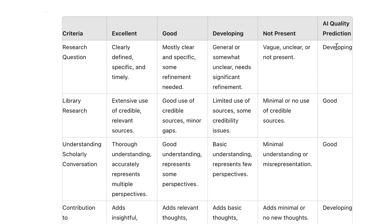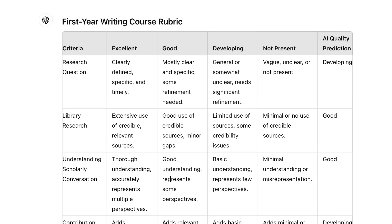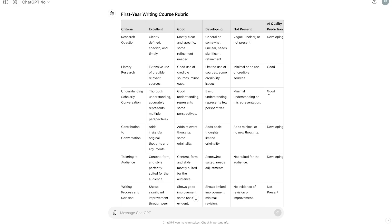This tells me what an AI might be capable of doing. For example, when it comes to the research question, the AI might put out work that is at the level of developing. However, for understanding the scholarly conversation, the work of an AI might reach the level of good. From here, I have a few options. I might be happy with what was generated as a starting point and go from there on my own. Seeing the criteria that the AI generated might also help me realize something that is perhaps missing from the rubric, which I could then ask AI to include.